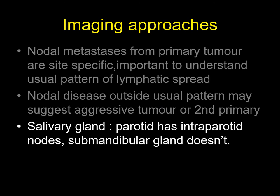Another very helpful tip relates to the salivary glands. When you scan level 2, you see just the tail end of the parotid gland, and the parotid gland has intraparotid lymph nodes — therefore it can have metastasis within those nodes or other diseases affecting lymph nodes. Remember, however, that the submandibular gland does not have any lymph nodes, due to the fact that it got encapsulated quite early on, and therefore it is very unlikely to have any nodal disease or metastasis within it.